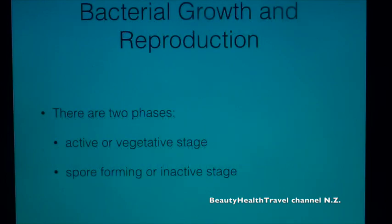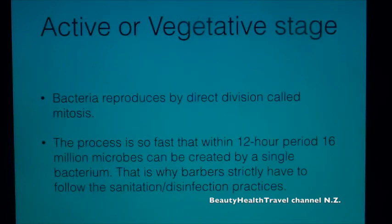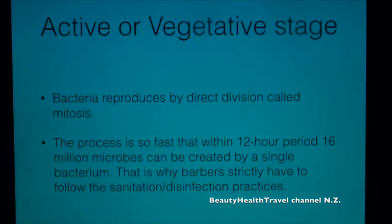Bacterial growth and reproduction has two phases: the active or vegetative stage and the spore-forming or inactive stage. In the active or vegetative stage, bacteria reproduce by direct division called mitosis. The process is so fast that within a 12-hour period, 16 million microbes can be created by a single bacterium. This is why barbers must strictly follow sanitation and disinfection practices.